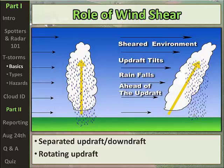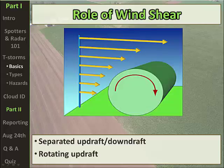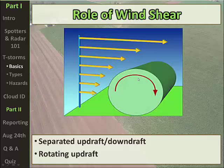Another role that wind shear plays is helping to rotate the updraft, which is another ingredient for severe weather — in particular, tornadic storms. Looking at the diagram, the westerly wind at the surface becoming much stronger aloft creates a rotor effect with horizontal rotation. If an updraft begins to lift this horizontal rotation, that rotation can eventually be oriented in the vertical, which increases the tornadic threat.